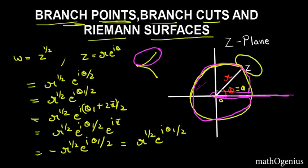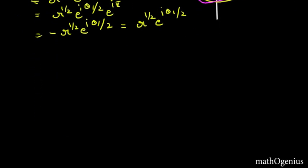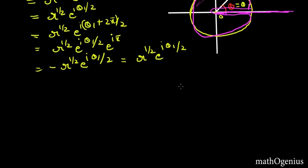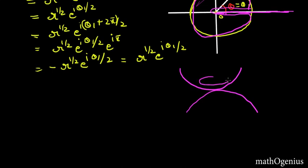Another mathematician, Riemann, solved this problem in a different way. He said we will take both values but on different surfaces. He took two surfaces and joined them at the branch cut. Whenever we make a complete rotation around the branch point and are about to cross the branch cut, we land on the other sheet and get the different value. On each single sheet of the Riemann surface, we have only a single-valued function. This also solves the problem of multivalued functions in complex analysis.